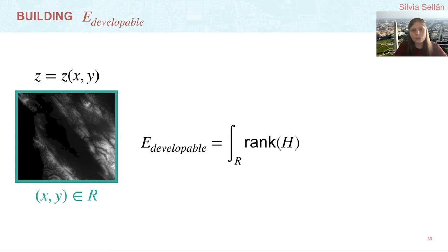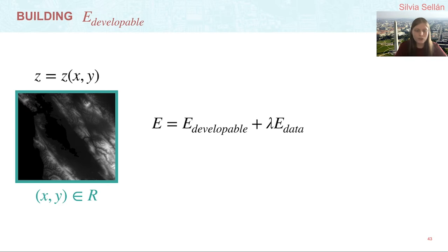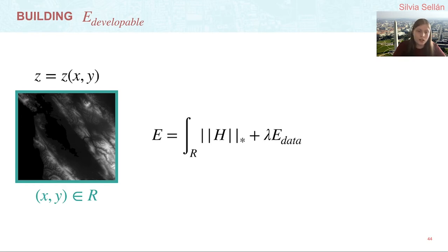Therefore, we will use the convex envelope of the rank function, called the nuclear norm, defined as the sum of singular values of the matrix, or more simply, the absolute values of the eigenvalues. This norm is surprisingly a convex function, and it is in fact the tightest convex envelope of the rank function. So we have finished building the developability term in our energy, and we can substitute our new developability energy.